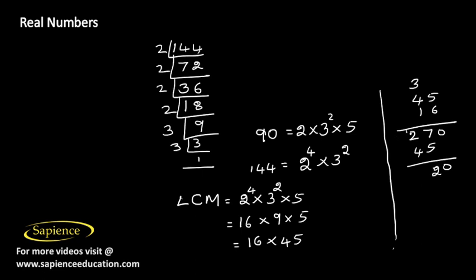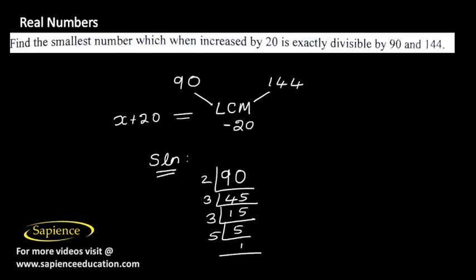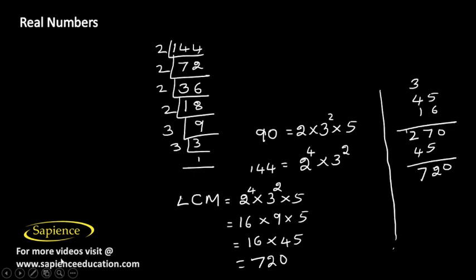16 × 9 = 144, and 144 × 5 = 720. We are getting the value of LCM as 720. But we need to find the smallest number that when increased by 20 is exactly divisible by 90 and 144, which means we need to subtract 20 from the LCM.